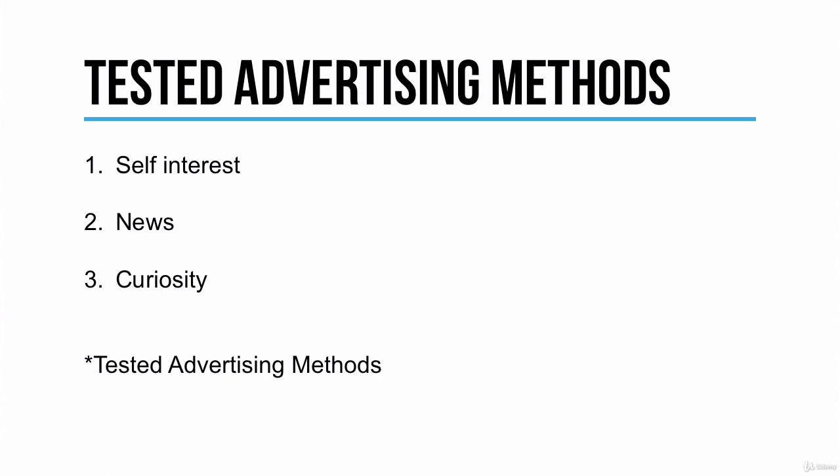These are actually ranked in order of importance. Self-interest is by far the most important aspect you can add to your headline to make it effective. The second most important is news, followed by curiosity. News would be announcing a new product or service, or announcing an update to an existing product or service.